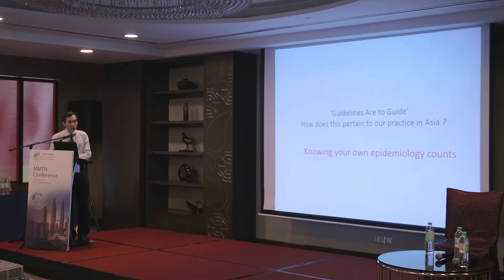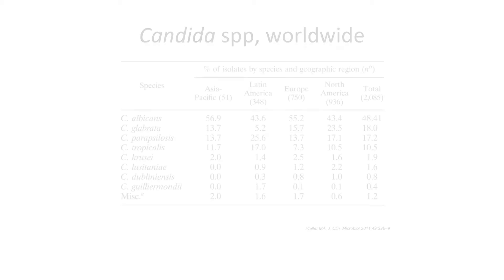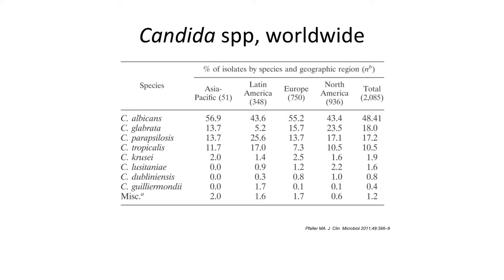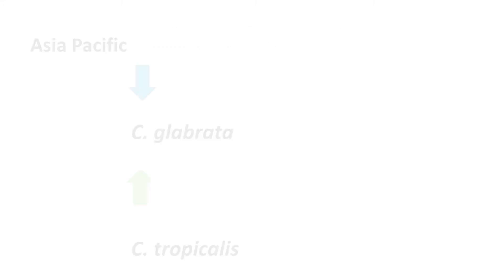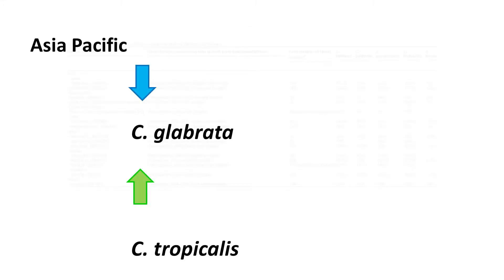So these are guidelines from the West. How does this pertain to our practice in Asia? Knowing what we do in our part of the world, what is the epidemiology — as you have heard from earlier speakers — about the slight difference in presentation and epidemiology of our candida cases, where there is an increased incidence of tropicalis and a relatively lower incidence of glabrata as compared to Western institutions.